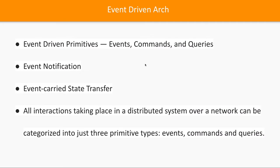What are the different primitives in event-driven architecture? There are three: events, commands, and queries. How microservices can talk: I can request data — that's a query. I can command you to perform some action — that's a command. These are event-driven primitives. There is also event notification and event-carried state transfer, where every event carries a state transition — state X transitions to state Y. All interactions in a distributed system can be categorized into these three primitives. If you understand events, commands, and queries, you will understand CQRS and event sourcing patterns.